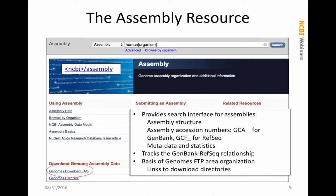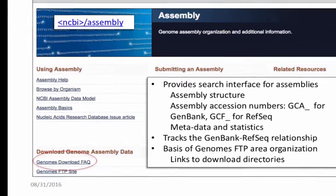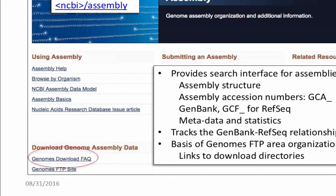The Assembly resource is one of our Entrez databases. It is the main way of finding out what genome sequences are available for particular organisms, and even metagenomes are in here now. We now have accession numbers for assemblies: GCA for GenBank assemblies and GCF for our RefSeq assemblies. This is how you track the relationship between GenBank and RefSeq, and it is the basis for the organization of the FTP site. Notice the link to the Genome Downloads FAQ — a lot of what I will be telling you today is based on that FAQ, and it is worth a read.